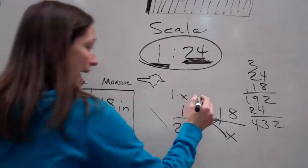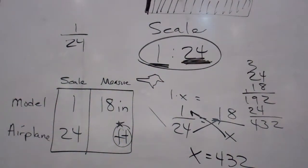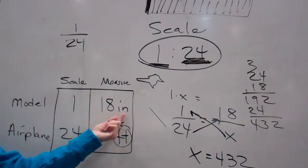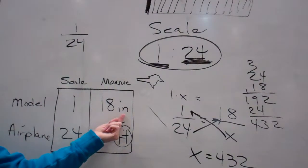So x equals 432. But that 432 is in inches. Everybody gets that? Because we didn't change your converting thing yet.